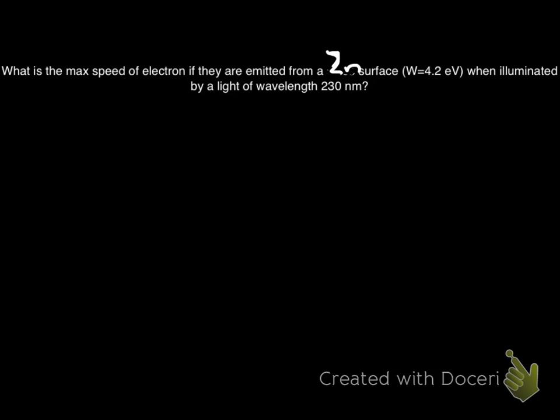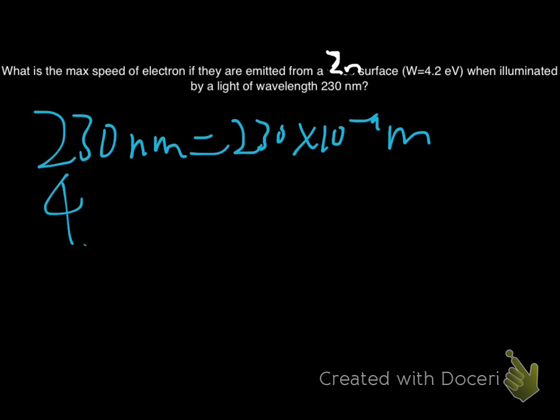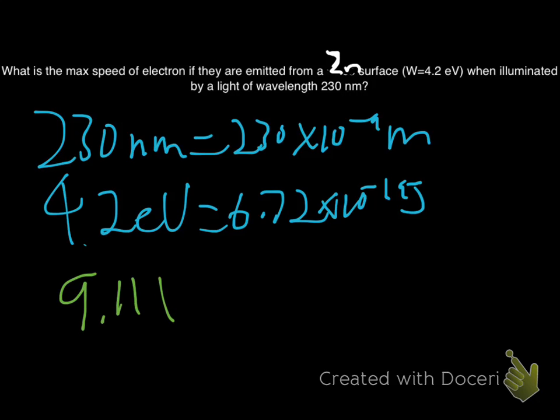First of all, let's convert everything into the appropriate units. 230 nanometers must equal to 230 times 10 to the negative 9 meters. 4.2 electron volts is equal to 6.72 times 10 to the negative 19 joules. And just a side note, the mass of one electron, which you can get from the data booklet, is 9.11 times 10 to the negative 31 kilograms.